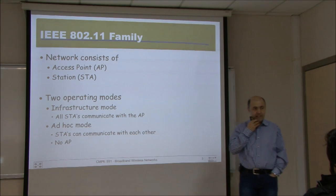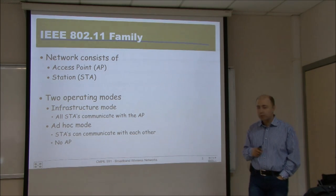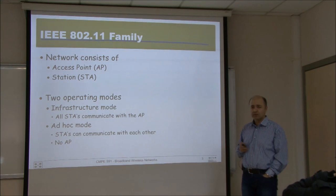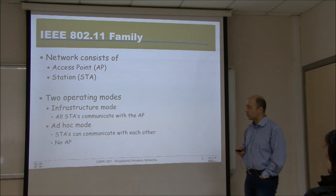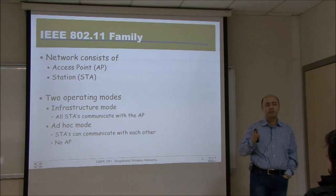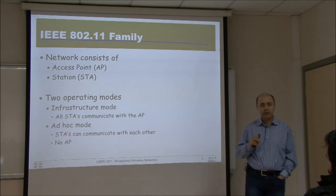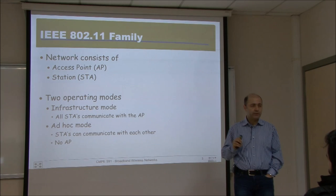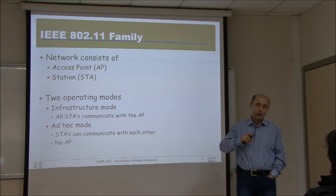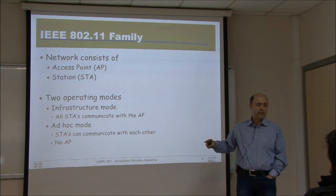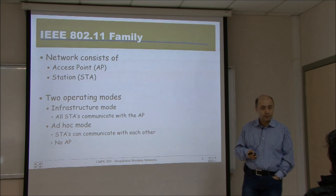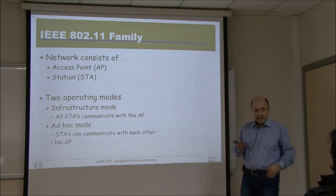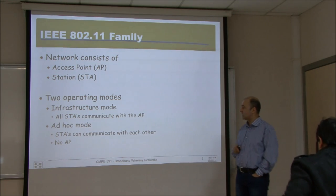Typically, a single cell consists of one access point and multiple stations. You can have multiple neighboring cells formed by multiple access points. The standard uses the abbreviations AP for access point and STA for station. There are two different operating modes. One is the infrastructure mode, in which everyone communicates via the access point — so even if you and your friend are sitting side by side, your packet first goes to the access point and then comes back.